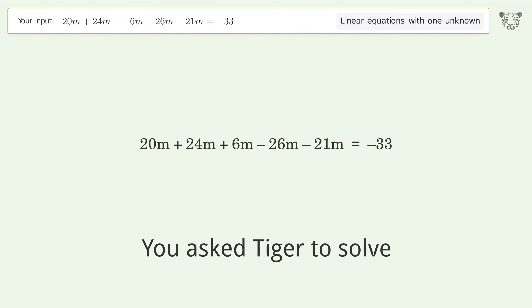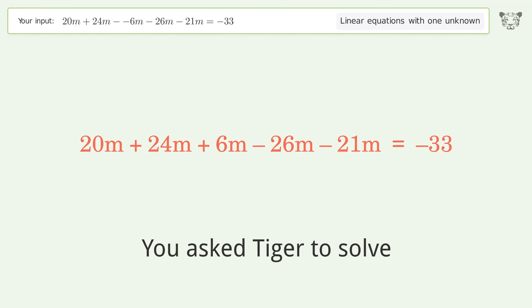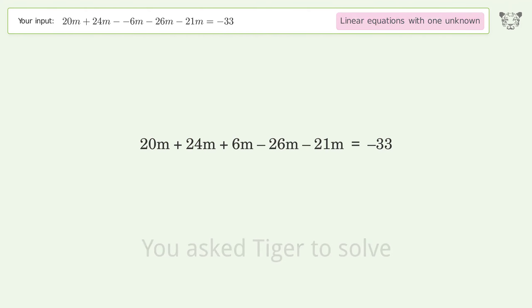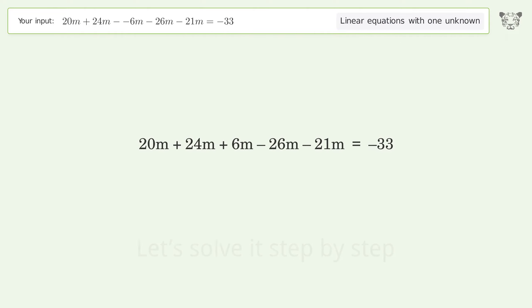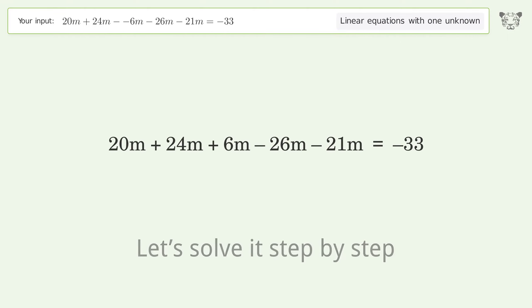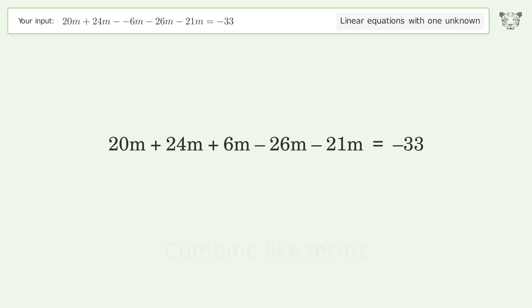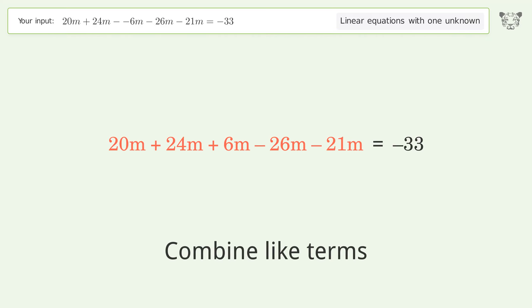Tiger solves a linear equation with one unknown; the final result is m equals negative 11. Let's solve it step by step. First, simplify the expression, then combine like terms.